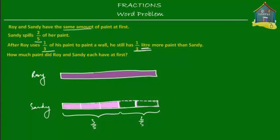Let's make the spilled parts dotted to show she doesn't have them anymore. Now, after Roy uses one-third of his paint to paint a wall, that means if his paint was divided into three equal parts, he used one of those parts to paint a wall.